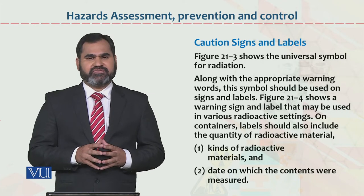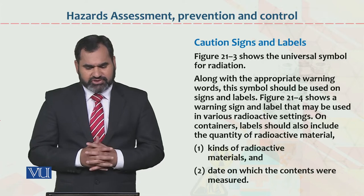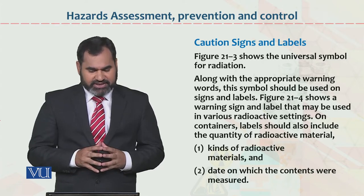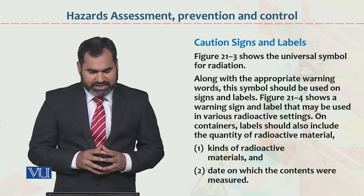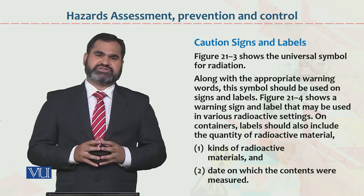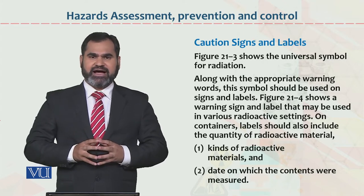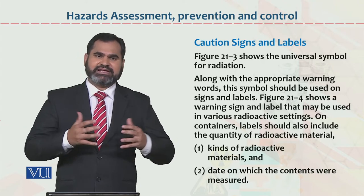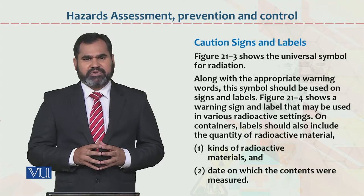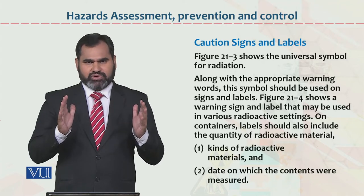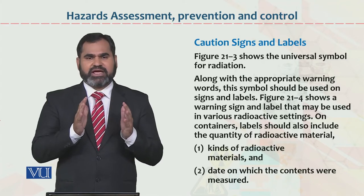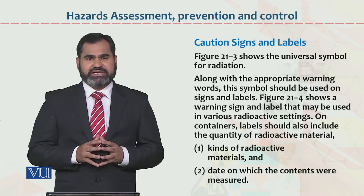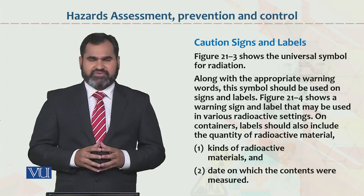Figure 21-3 shows the universal symbols for radiation. Along with the appropriate warning words, the symbols should be used on signs and labels. If you have a warning label or a guideline, it should be proper — so bold, so crystal clear — and implies to be training-familiar, so that people are aware of it.